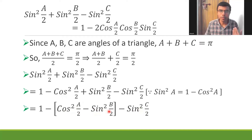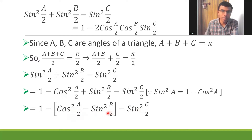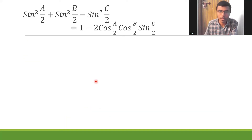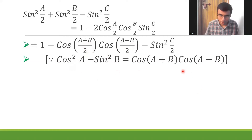Now, cos²(a/2) - sin²(b/2) is a standard formula: cos²A - sin²B = cos(A+B)·cos(A-B). With A = a/2 and B = b/2, this becomes cos((a+b)/2)·cos((a-b)/2), since the denominators are the same.